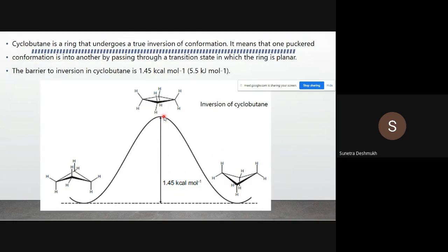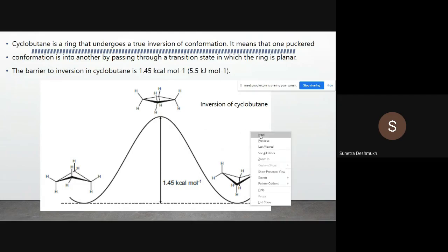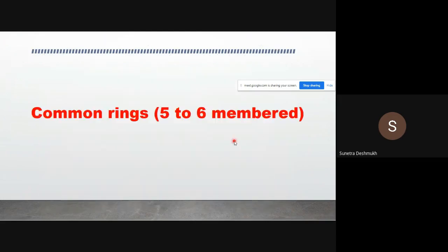The barrier for ring inversion in cyclobutane is 1.45 kilocalories per mole to convert from one conformation to another. This covers the stability of the cyclobutane ring. Next, we will look at the cyclopentane molecule.